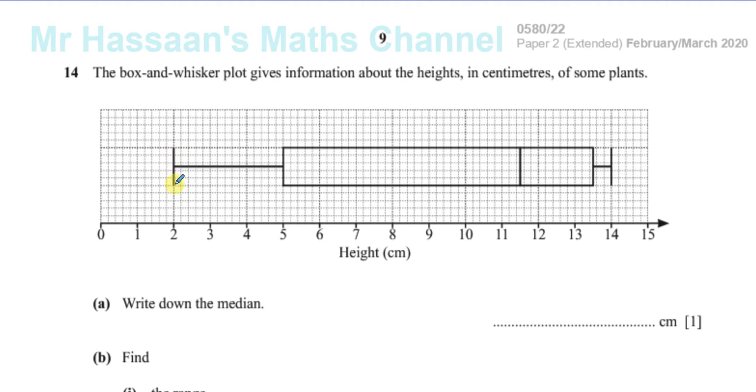So the first vertical line tells us the lowest value. And the last vertical line tells you the highest value of the numbers in the data. So that would be the height of the smallest, the shortest plant in the data that was there. And this would be the height of the tallest plant in the data.